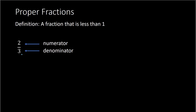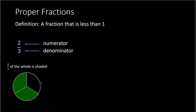A fraction means a part of a whole. In the following picture, we see a circle — it could be like a pie or pizza — and we have it split up into 3 equal parts. We have shaded in 2 of those 3 parts, so we can write this as 2 over 3, or 2 thirds. So a fraction represents a portion of the whole.